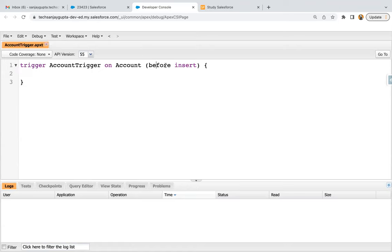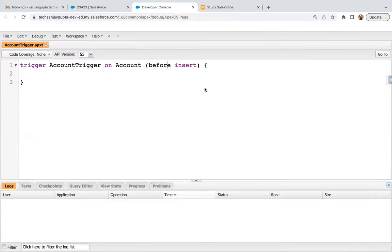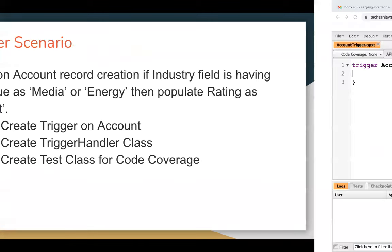In a trigger we have seven events. The requirement says we need to check this condition upon account record creation, so we can use either before insert or after insert. For this requirement I'm going to choose before insert, because we are just populating the rating field on the same record being created — we don't need to modify any related record. If you are doing modification in the same record through which your trigger is triggered, you can use the before insert event.